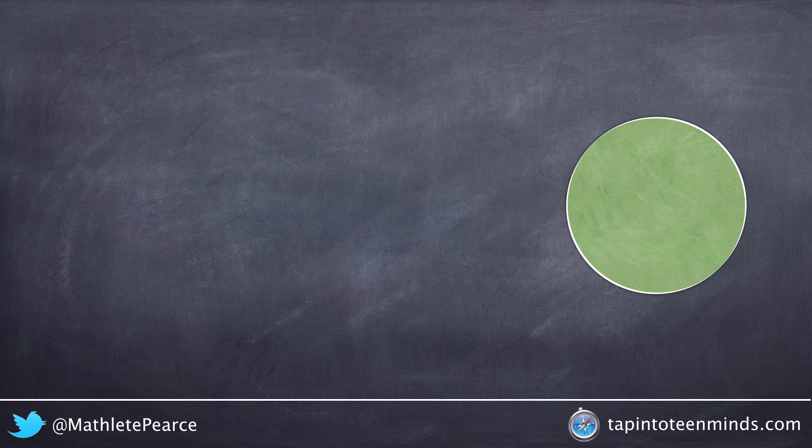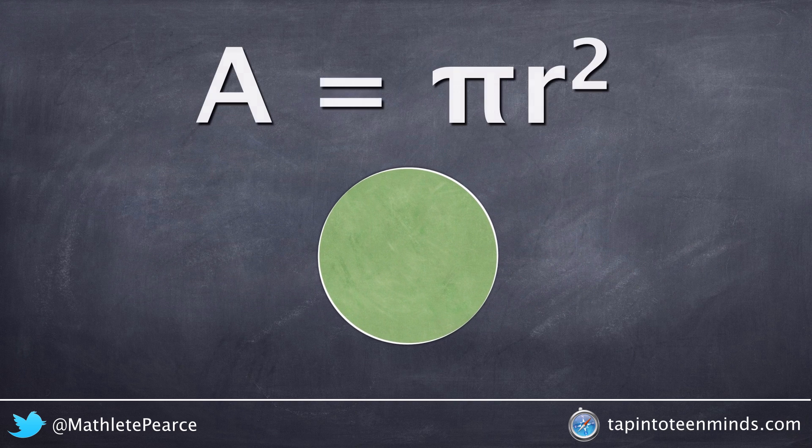We'll start by going back down to the base of the cylinder, which happens to be a circle. And in previous years, you've learned that the area of a circle is pi r squared.